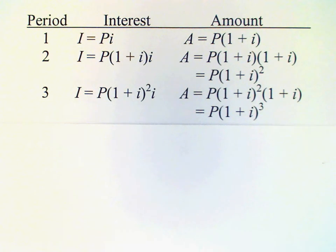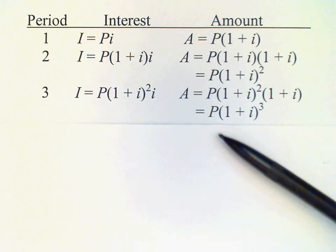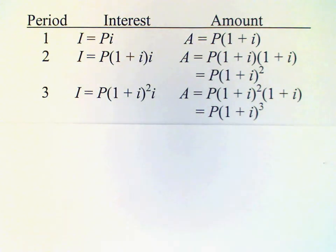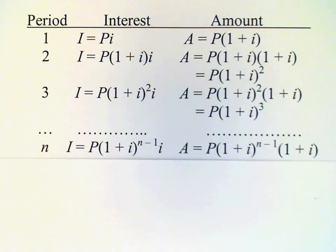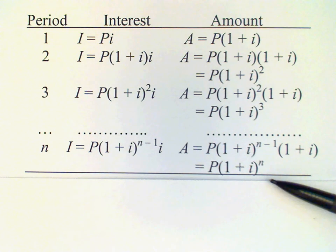I think you can see the pattern developing now. After n periods we're going to have P times one plus i raised to the n power. This is our general formula for the compound amount for principal P invested at compound interest at rate i per period for n periods.